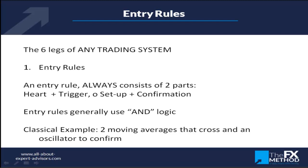A trading system must have very clear entry rules. An entry rule always consists of two parts: the heart and the trigger, or the setup and the confirmation — I don't care how you call them. The names are not important; what matters is the logic behind it. The setup is basically the conditions — for example, in a breakout system, it makes no sense to trade without checking if there's enough volatility.